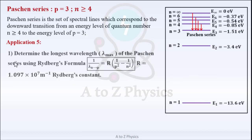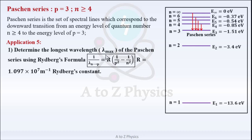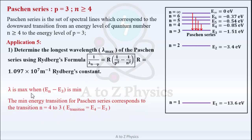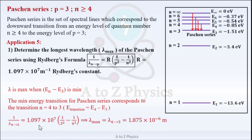Paschen series, Part 1: Determine the longest wavelength λmax using Rydberg's formula. Lambda is maximum when EN minus E3 is minimum. The minimum energy transition for the Paschen series corresponds to the transition N = 4 to N = 3. 1/lambda = 1.097×10⁷ × (1/3² − 1/4²). You will get λmax = 1.875×10⁻⁶ m, which equals 1875 nanometers.